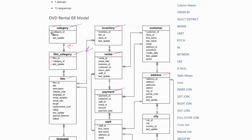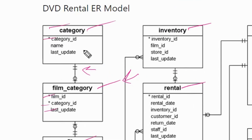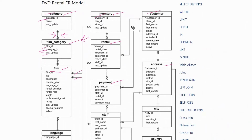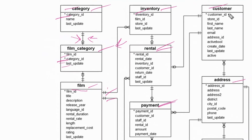Please pay attention here: each and every table is linked with another table. Within the category table, we have a column named category ID, and this category table shows a relation with the film category table. Within the film category table as well, you will find this category ID column, which was also common in the category table. Let's take the customer table — it shows two relations with two different tables: first with the rental table, and second with the payment table. The customer table has a column named customer ID, and the rental table also has a column named customer ID. The same customer ID column is also common within the payment table.